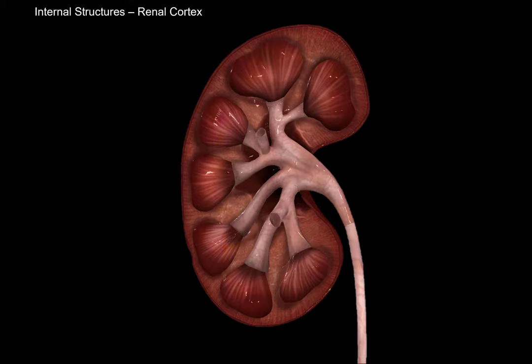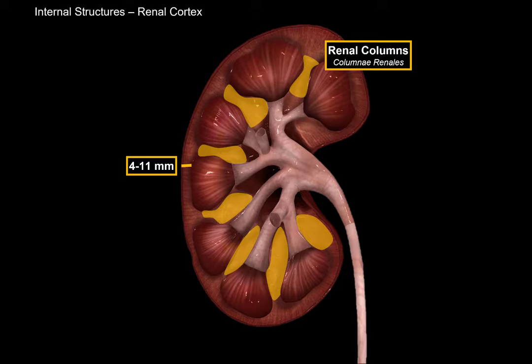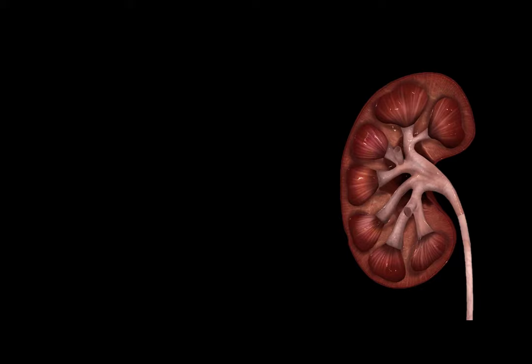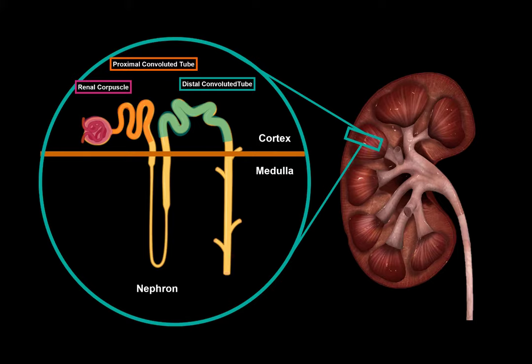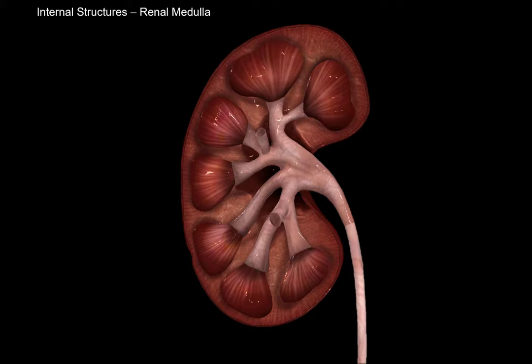The renal cortex is dark brown in color, soft and granular in consistency, and can be between 4 to 11 mm thick. Parts of the cortex extend down between the medulla as extensions called the renal columns. The renal cortex is composed of parts of the nephron — the kidney's main functional unit. There are around 1 to 1.5 million nephrons per kidney, and the parts lying in the cortex are the renal corpuscle, the proximal convoluted tubule, and the distal convoluted tubule. The rest of the nephron lies in the medulla.